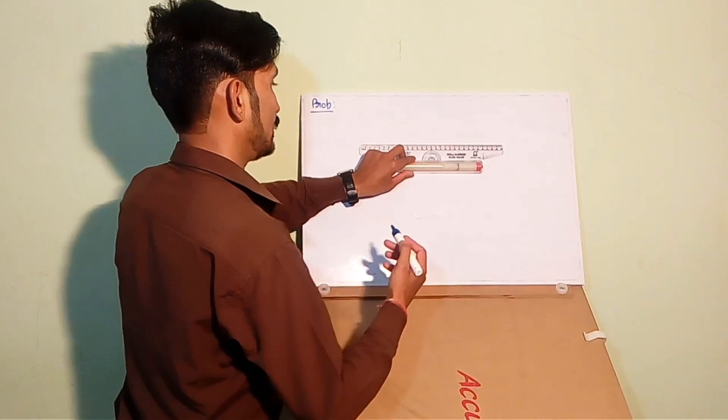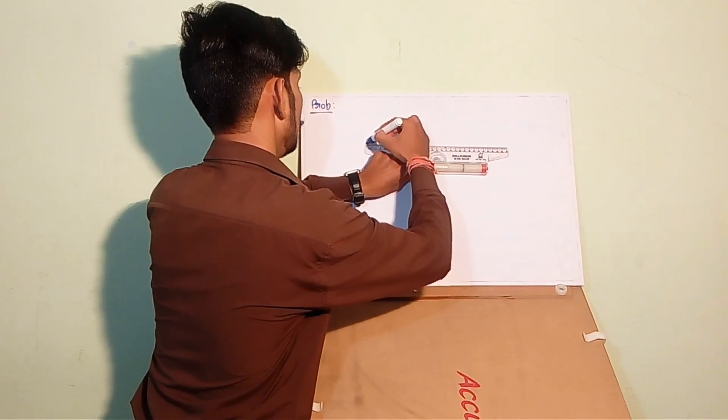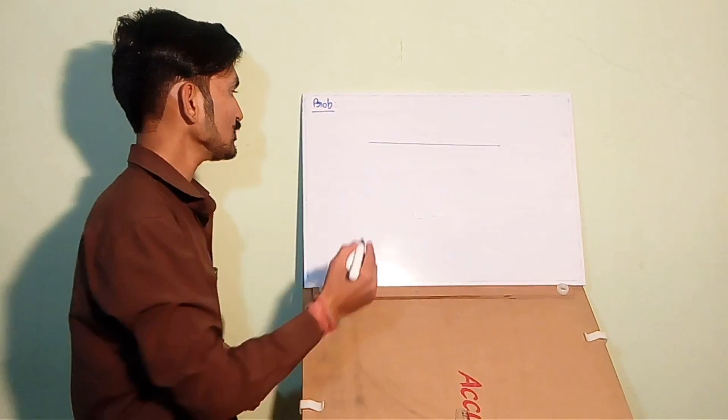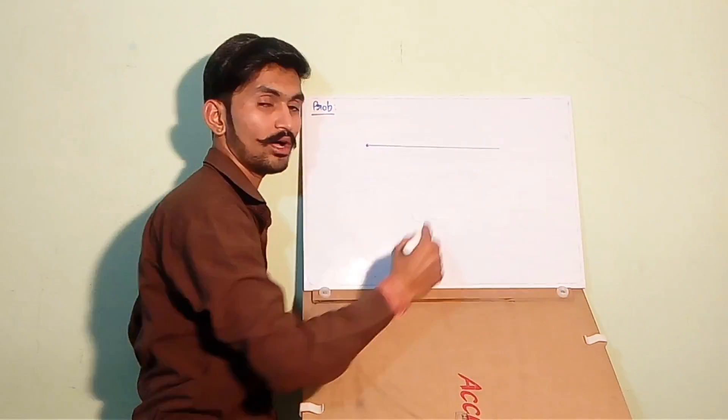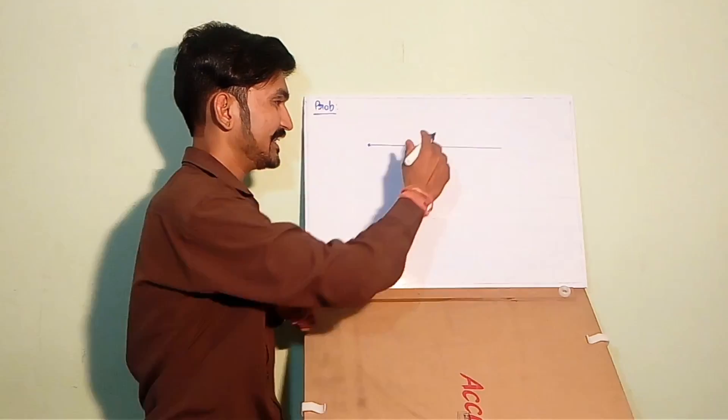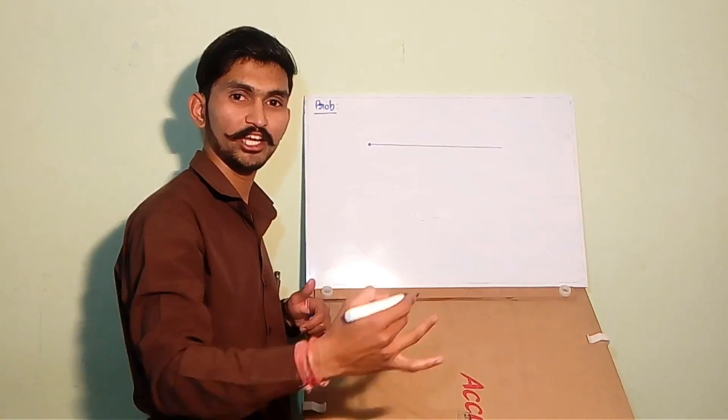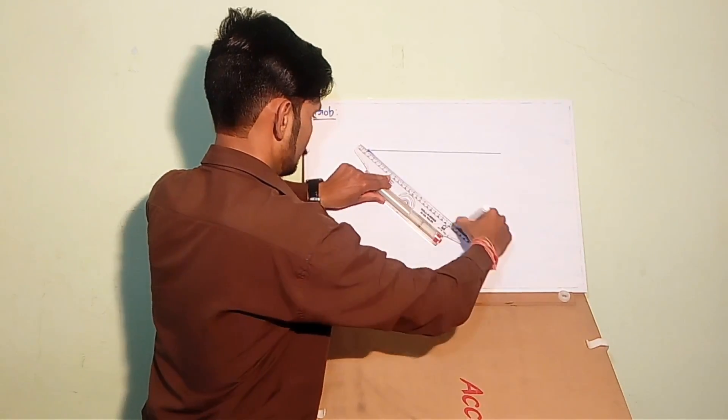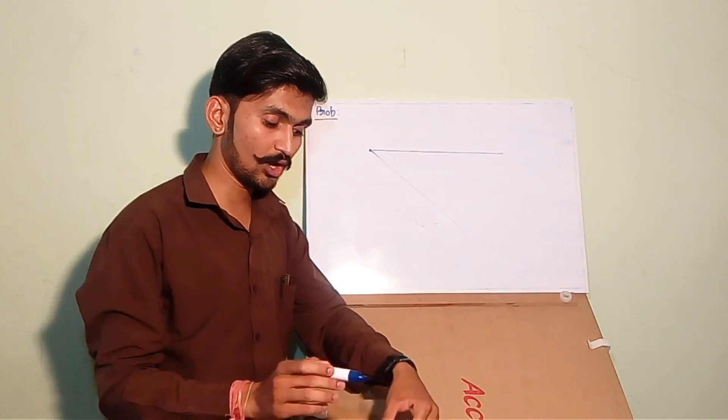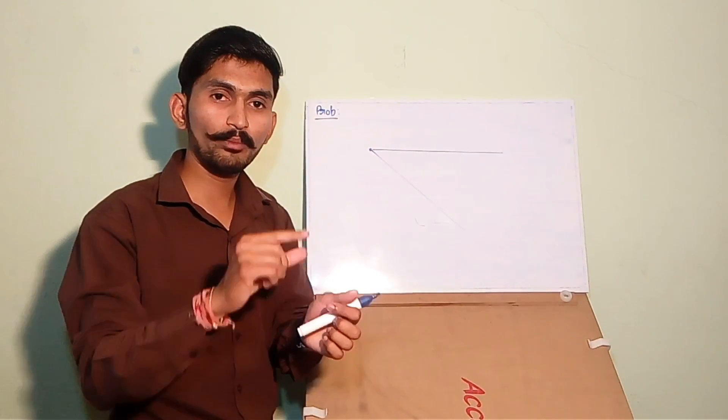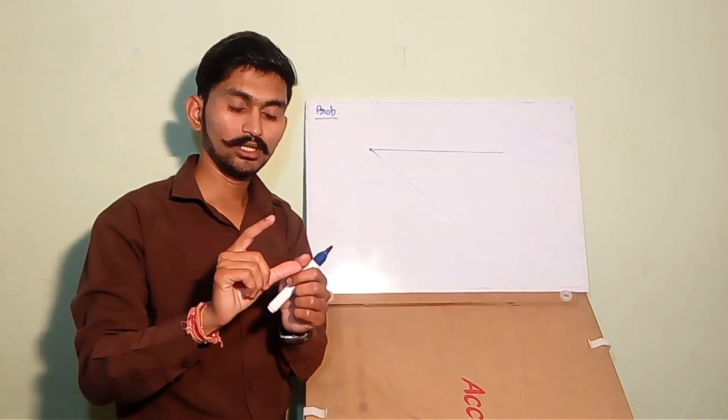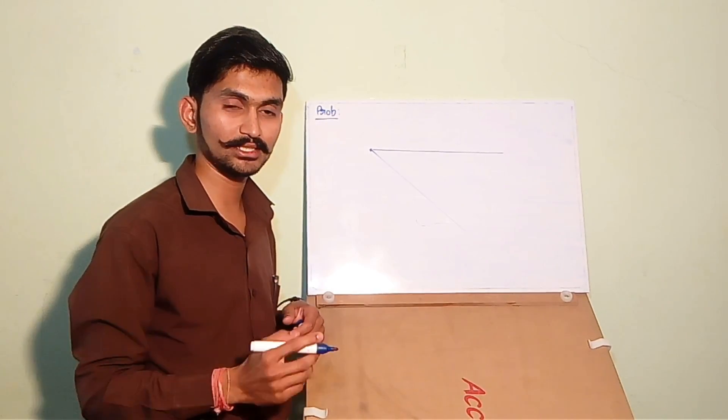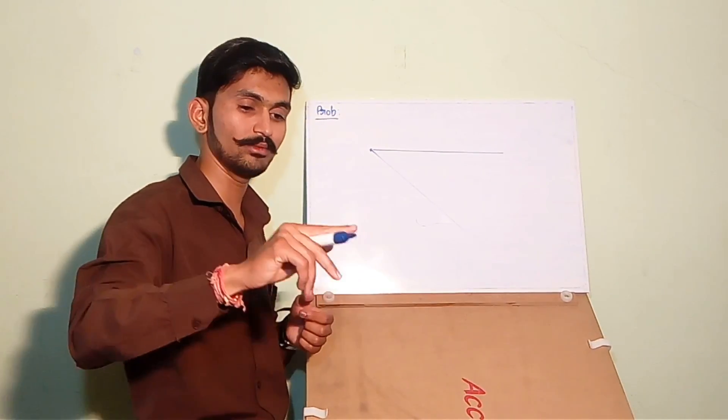I am drawing a line of 14 centimeters roughly. This is the line of 14 centimeters. Take a point, draw a line and draw another line inclined to that line at a random angle. Now open your divider randomly and divide this line into 14 equal segments.